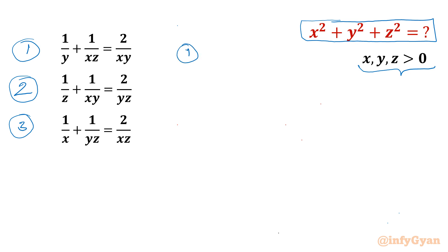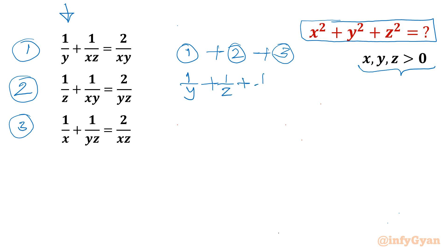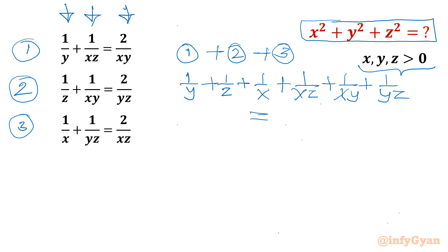Now I will perform the operation 1 plus 2 plus 3 — adding all three equations. I will consider column by column. So the first column gives 1/y + 1/z + 1/x. The second column gives 1/xz + 1/xy + 1/yz. The right-hand side gives 2/xy + 2/yz + 2/xz.